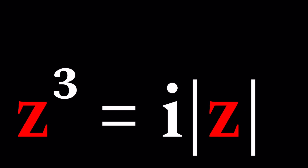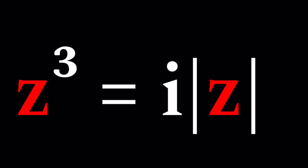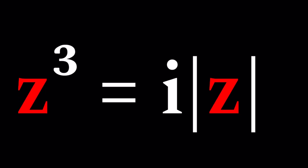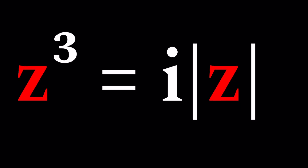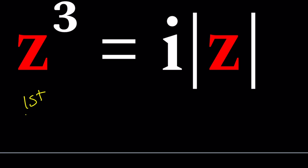Hello everyone, welcome to a plus bi. This channel is all about complex numbers and in this video we're going to be solving a cubic equation with absolute value. We have z cubed equals i times the absolute value of z, and we're going to be solving for z values. I'll be presenting two methods and let's start with the first one.